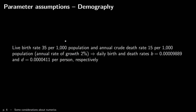For demography, he assumes a live birth rate of 35 per thousand population and annual crude death rate — without disease — of 15 per thousand. This gives an annual growth rate of 2% of the population, and the corresponding parameter values are these values here.